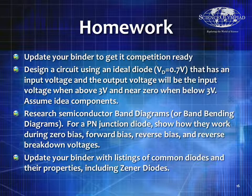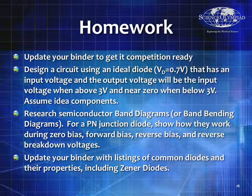Update your binder to get a competition record. Design a circuit using an ideal diode but include the forward bias voltage of 0.7 volts — no resistance but still has forward bias voltage — such that the output voltage equals the input voltage when above 3 volts and is near zero when below 3 volts. Assume generally ideal components. Research semiconductor band diagrams and how they bend with zero bias, forward bias, reverse bias, and reverse breakdown. Also list common diodes and their properties, including zener diodes, in your binder.